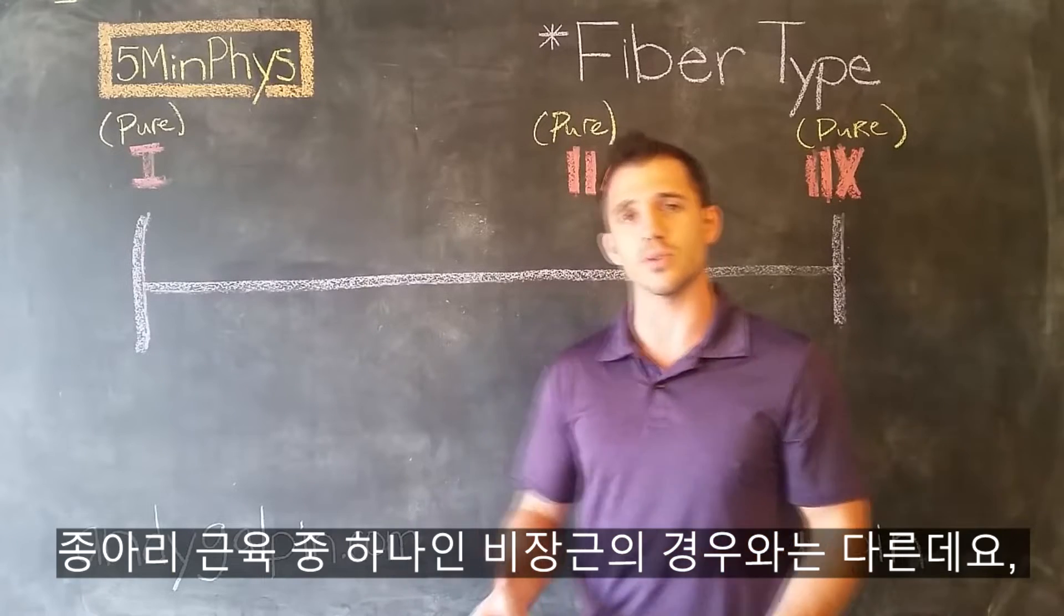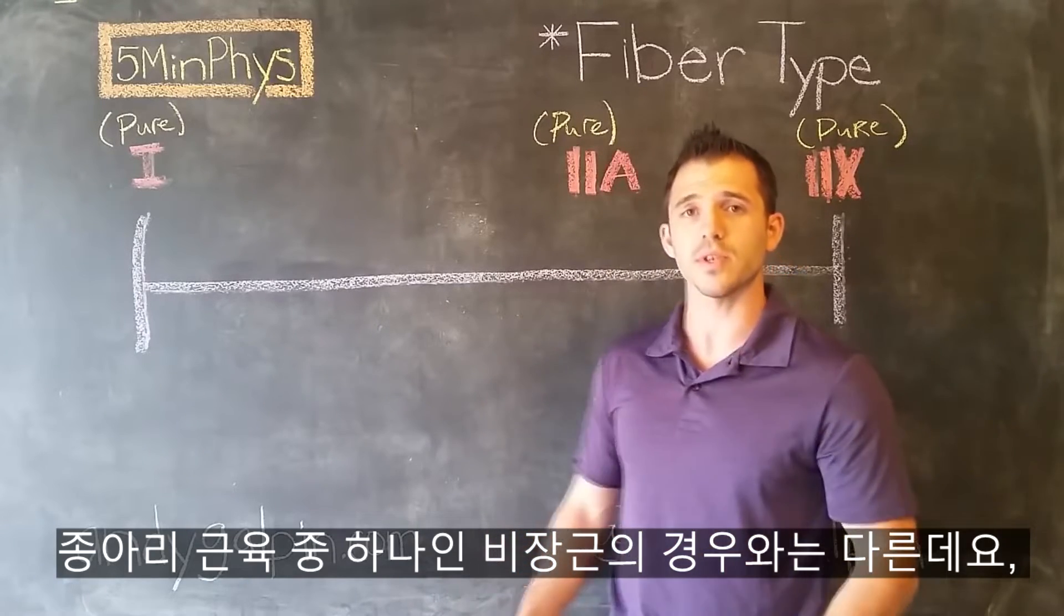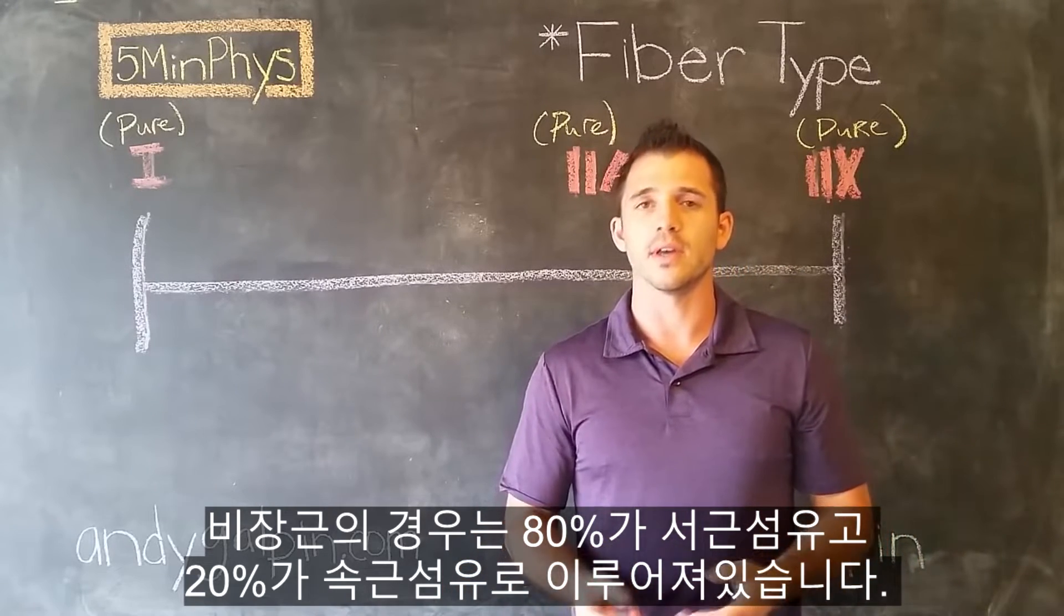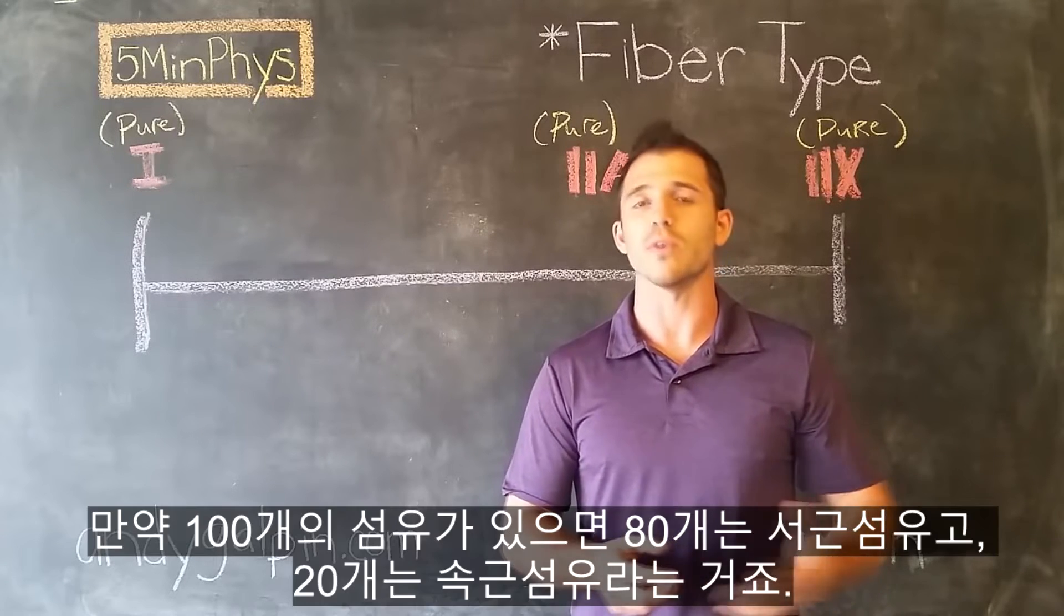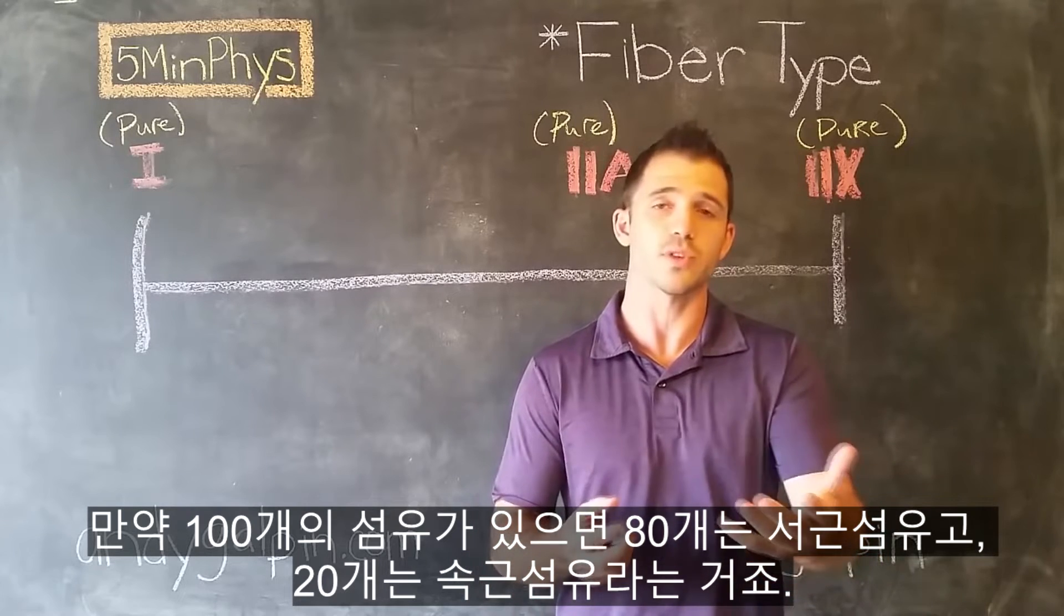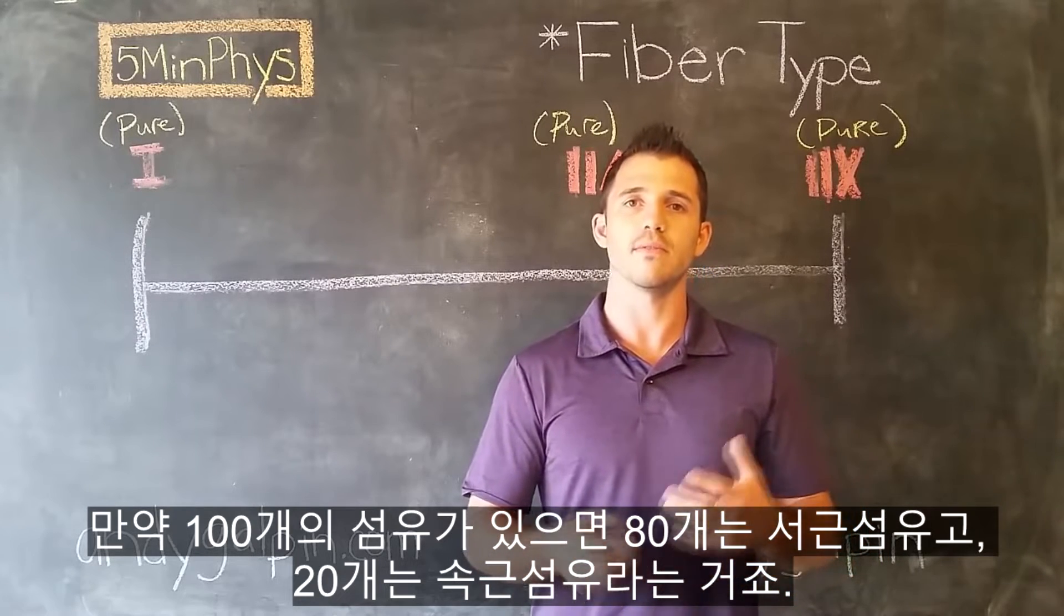That's different from something like your soleus, which is one of your calf muscles. Your soleus is actually maybe something more like 80% slow twitch and 20% fast twitch. So if there were 100 total fibers in it, 80 of them would be slow twitch and 20 would be fast twitch.